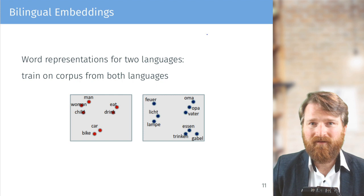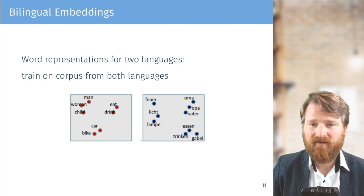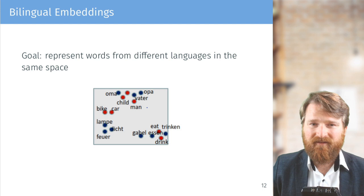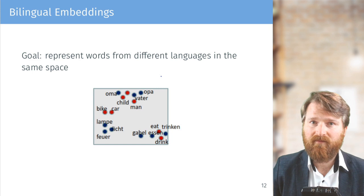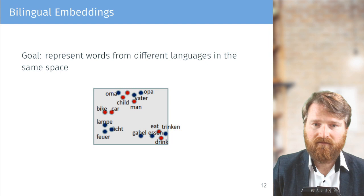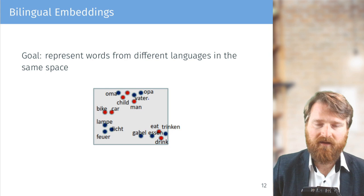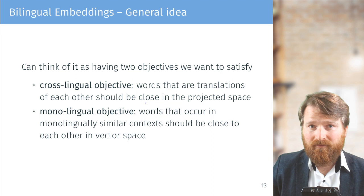Let's move to multilingual embeddings. We start with bilingual embeddings — representing words across two languages. We train on single languages first, getting word embeddings for language A and language B — say English and German. What we really want is for words from different languages to be close in a shared space. For example, 'father', 'Oma', 'Opa', and 'child' should be closer to each other than to unrelated words like 'eat' or 'drink'.